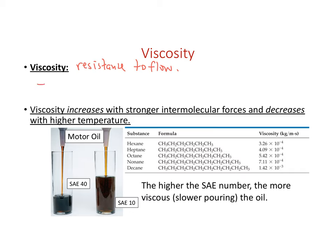Honey is more viscous than water — it will take a lot longer to pour the same volume of honey. The same is true with motor oil. Different motor oils come with a different ranking that tells you the viscosity. Under certain temperature ranges, we want to use a different weight of motor oil. SAE 40 versus SAE 10 — the higher the SAE number, the more viscous that sample is. SAE 10 is less viscous, so you can pour a larger volume of it in the same period of time.